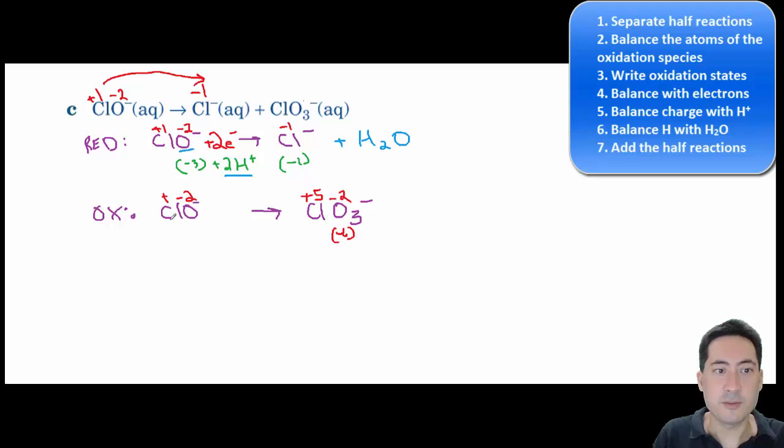And so how do we get from plus one to plus five? We're going to have to get rid of four electrons on here. Okay, so the next step is the hydrogens balancing the charge on both sides. So this has a charge of minus one on this side. And this has a charge of minus five on this side. So we're going to have to add four H pluses to get them both to minus one.